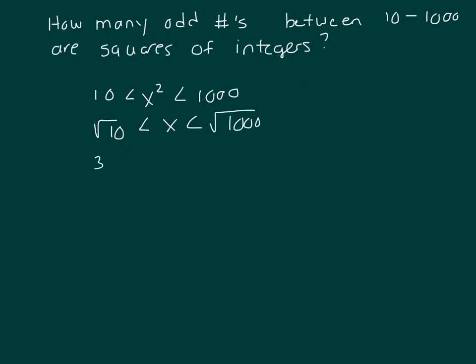The square root of 10 is 3 point something, which is less than x. And the square root of 900 would be 30. 31 — will that fit in there? Wait, that's 31 squared is 961, which is less than 1,000. Yeah, that's less than 1,000. So this is going to be somewhere around 31 point something.